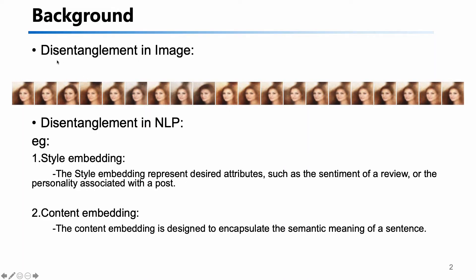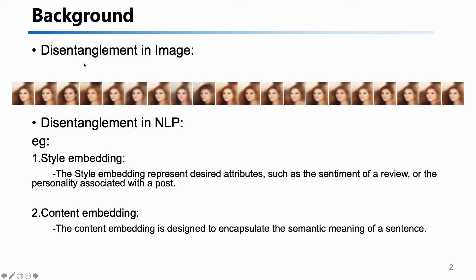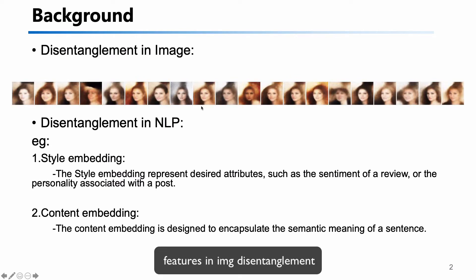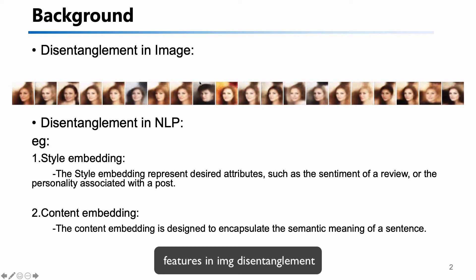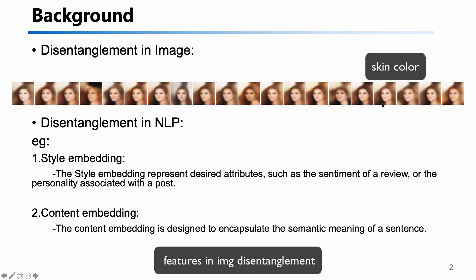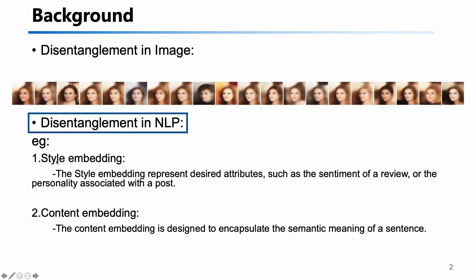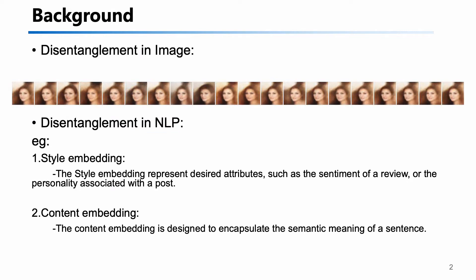We know that in disentanglement in images, we could embed different features of an image into different spaces. But in NLP, we do not have so many features like gender, angle, or skin color. One of the features it has is the style of the sentence, which is positive or negative, and the content of the sentence.